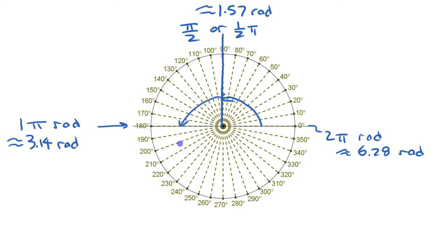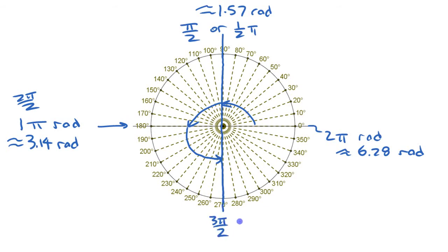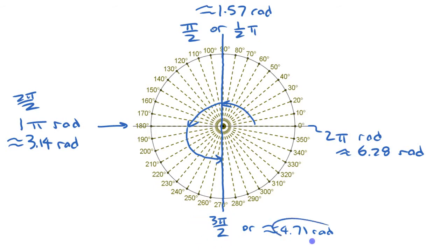So this is one half of pi; this is pi, or two halves of pi — you could say two pi over two. If you think of it as counting by pi over twos: pi over two, two pi over two, then three pi over two down here at the bottom. That's three pi over two, or roughly 4.71. You can express them as exact value or approximate value.